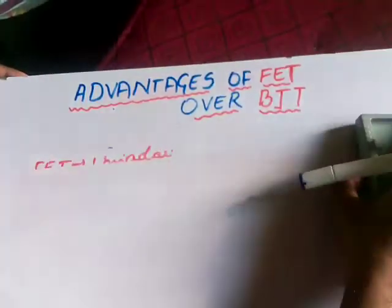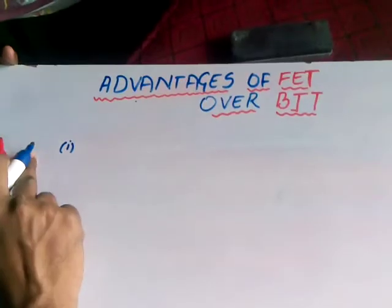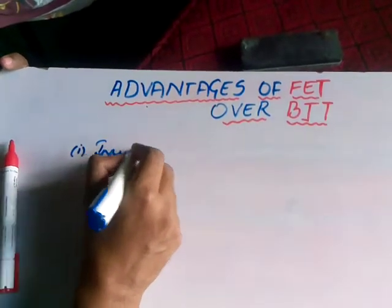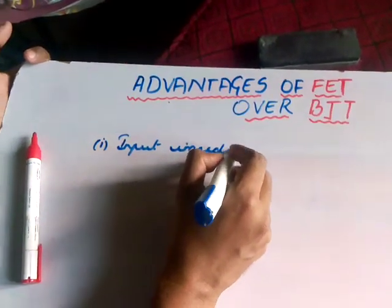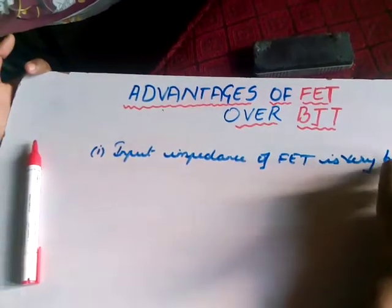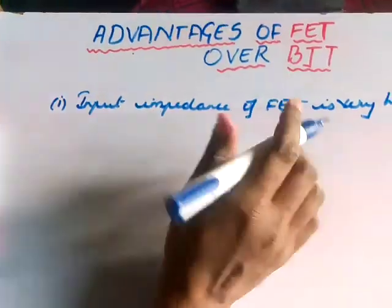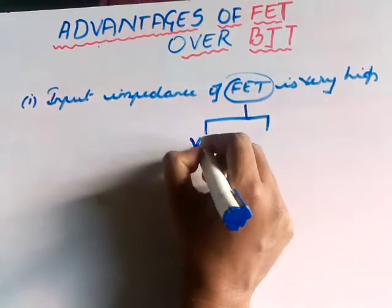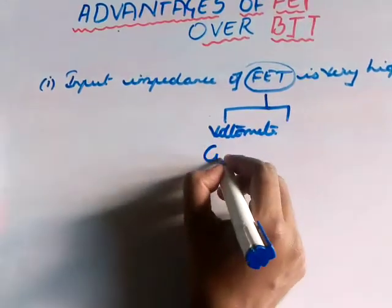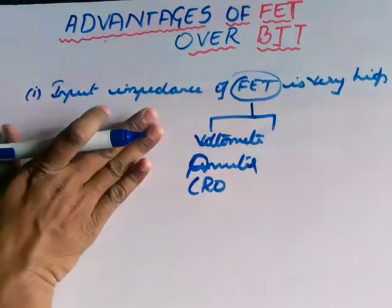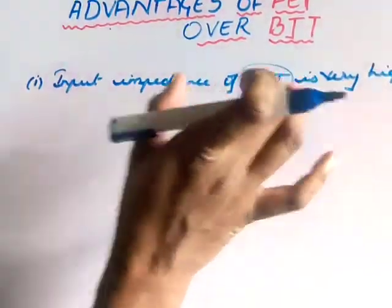Now let us enter into the basic major advantages of FET. The first one is FET is having very high internal impedance — that is, the input impedance of the FET is very high. That is why field effect transistors are used in many measurement devices such as voltmeters, ammeters, and CROs.